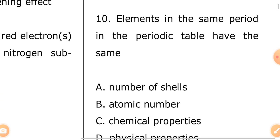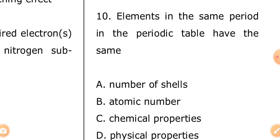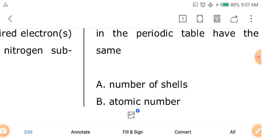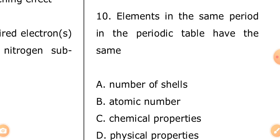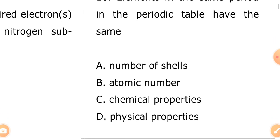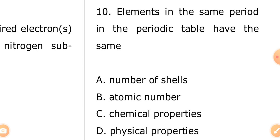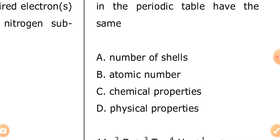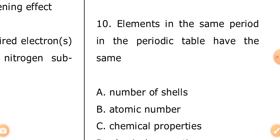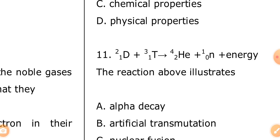Question ten: elements in the same period in the periodic table have the same — A: number of shells, B: atomic number, C: chemical properties, D: physical properties. The answer is number of shells. Elements in the same period in the periodic table have the same number of shells.